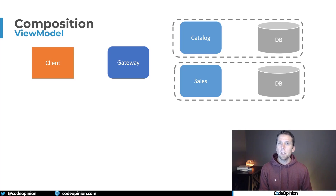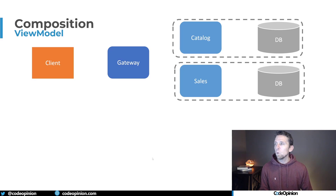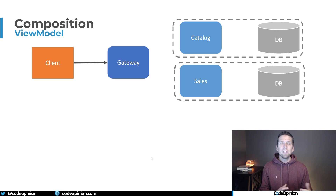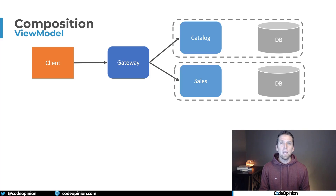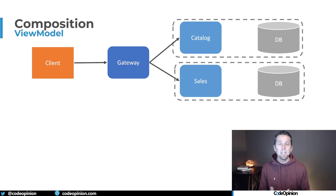The last thing I want to touch on is doing this composition more transparently. When a request comes in for a particular route or URI, you can register each service with a gateway saying it wants to handle a portion of that request. The gateway then knows to send out requests to the catalog service and the sales service concurrently.